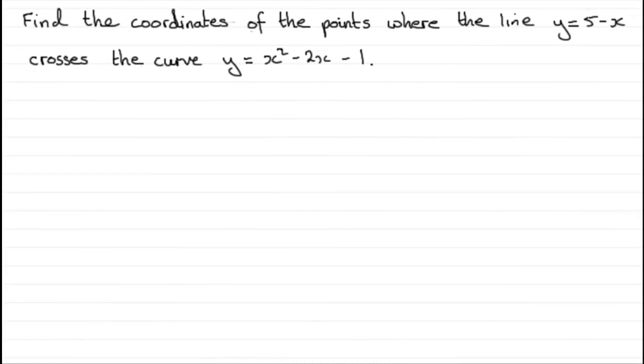Hi. Now, in this example, what we've got to do is find the coordinates of the points where the line y equals 5 minus x crosses the curve y equals x squared minus 2x minus 1.